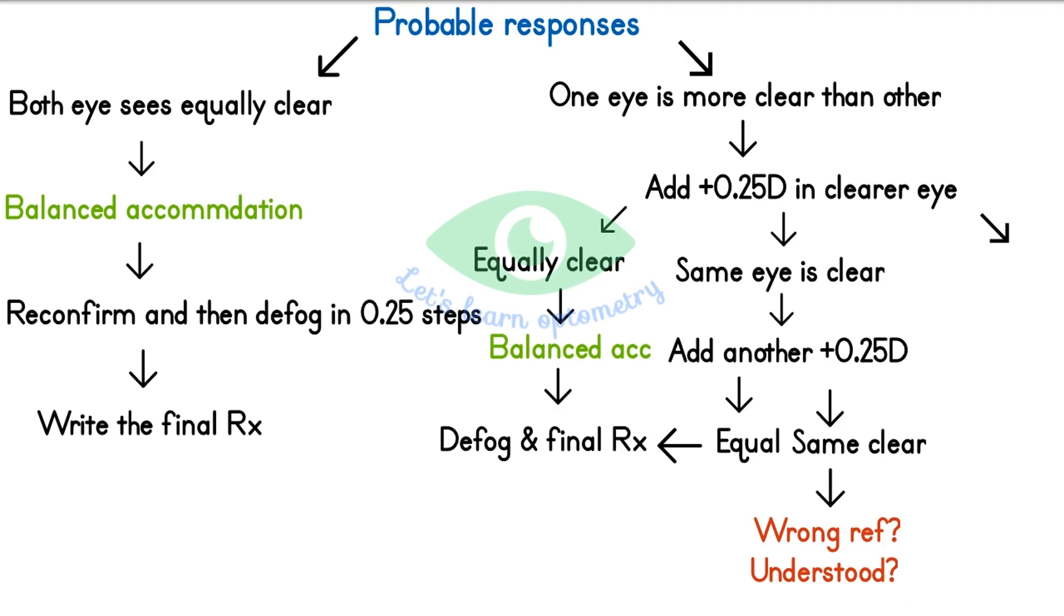Third response would be a reversal. It means, first the patient said left eye is more clear than the right eye but after adding 0.25 diopter, they say now right eye is more clear than the left eye. This is an immediate reversal. In this case defog and leave the dominant eye with a slightly better acuity.